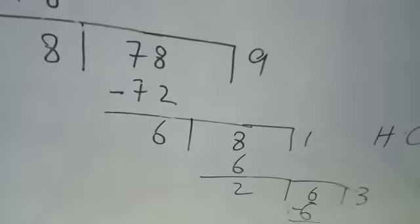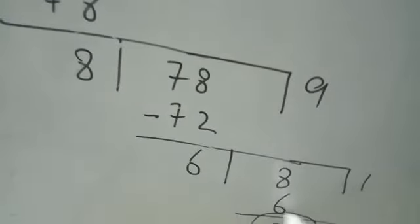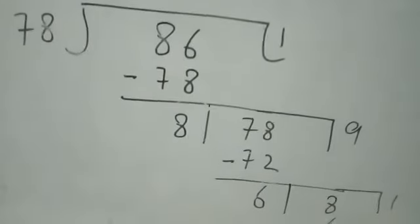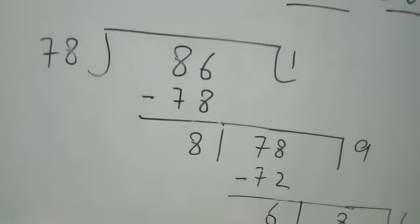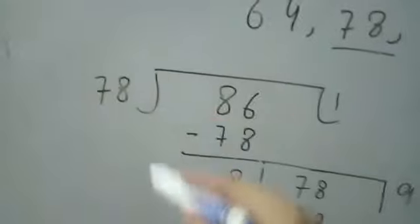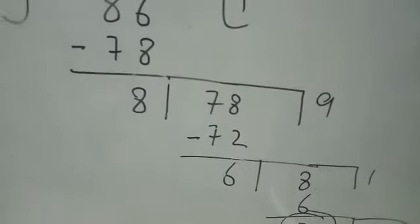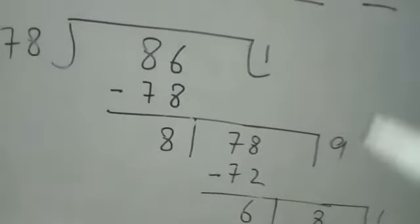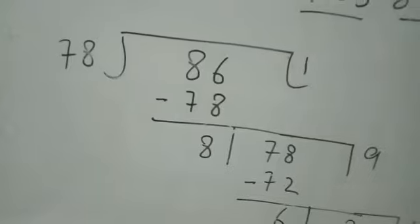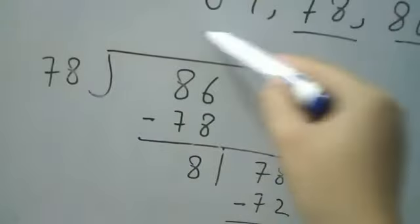Now the last divisor remaining is 2, which is the HCF of 78 and 86. If you only had two numbers, you would use this method and the last divisor would be the HCF of those numbers. But here we have three numbers, and we haven't used 64 yet.